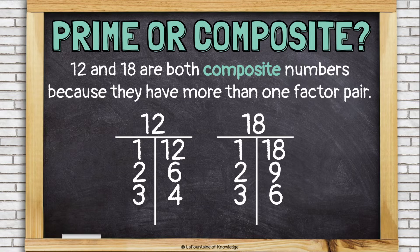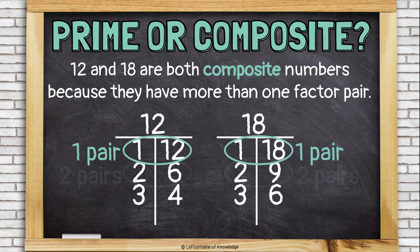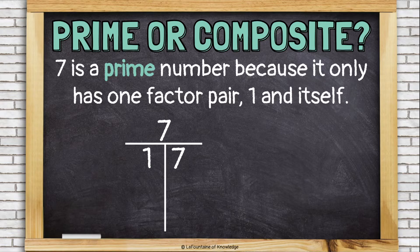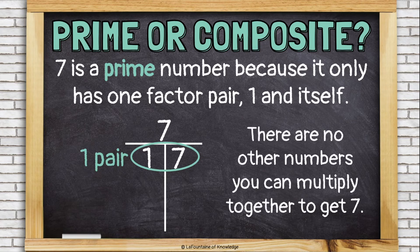12 and 18 are both composite numbers because they have more than 1 factor pair. They each have 3 factor pairs — that makes them composite numbers. 7 is a prime number because it only has one factor pair: 1 and itself. Remember, I call that the freebie factor pair. There are no other numbers you can multiply together to get 7.